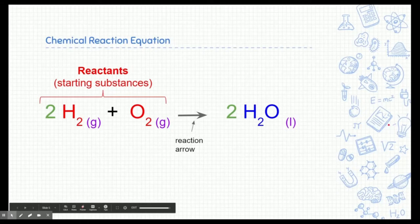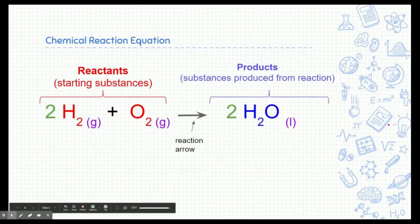Now the reaction arrow represents a change. The change is taking place and it's going through a reaction. On the right side of the arrow, we get a product or products, and these are the substances that are produced from the reactants. They're the things that were changed into from the reactants.